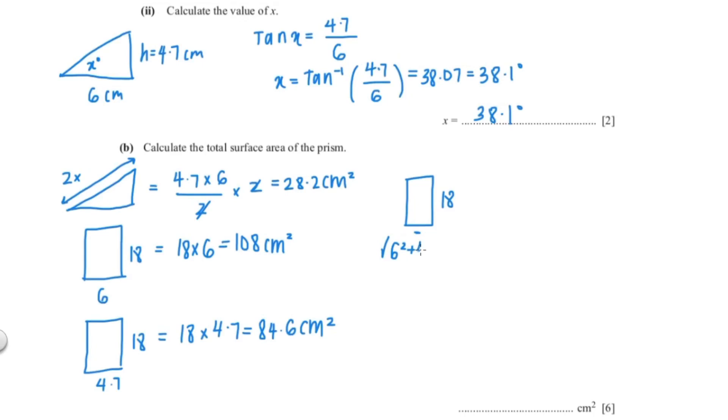So 6 squared plus 4.7 squared and square root the whole thing. So 18 multiply by the square root of 6 squared plus 4.7 squared. That gave me an answer of 137.1 cm² which I round to 1 decimal place.